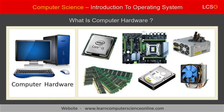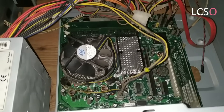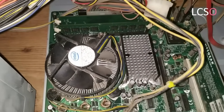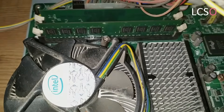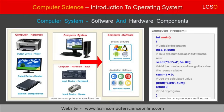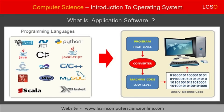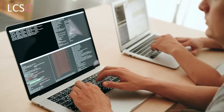The computer hardware is a general term used to describe the various physical components that are an essential part of every computer system. The computer hardware includes various mechanical, electrical, and electronics components used to build the computer system. Whereas the software components provide a set of instructions which directs the computer to perform a specific task. In other words, a software is a computer program used to communicate with the computer regarding the operation that we want the computer to perform.